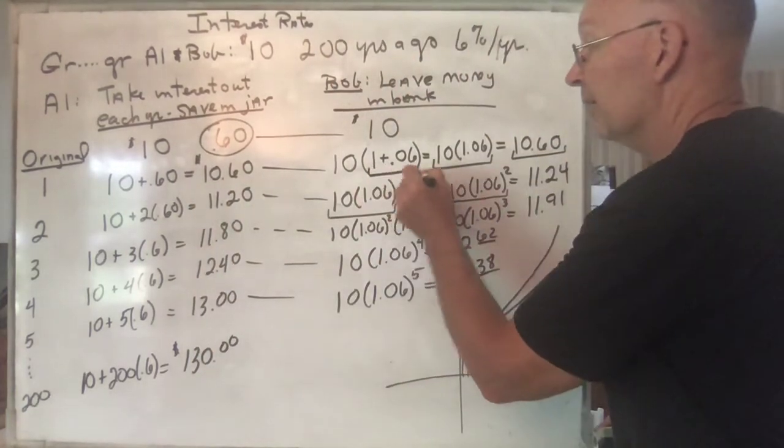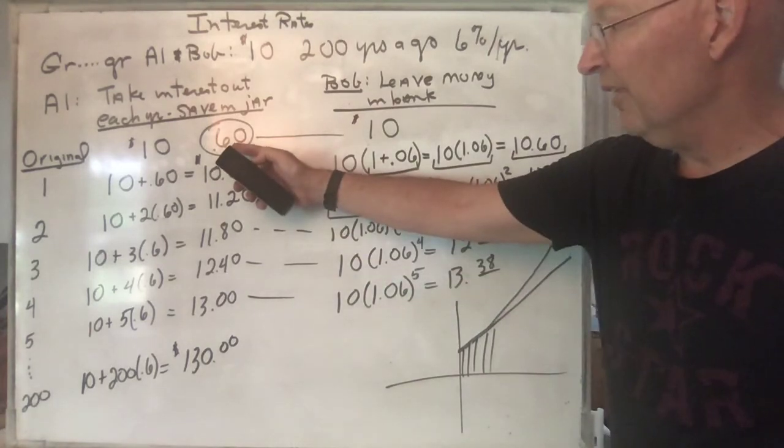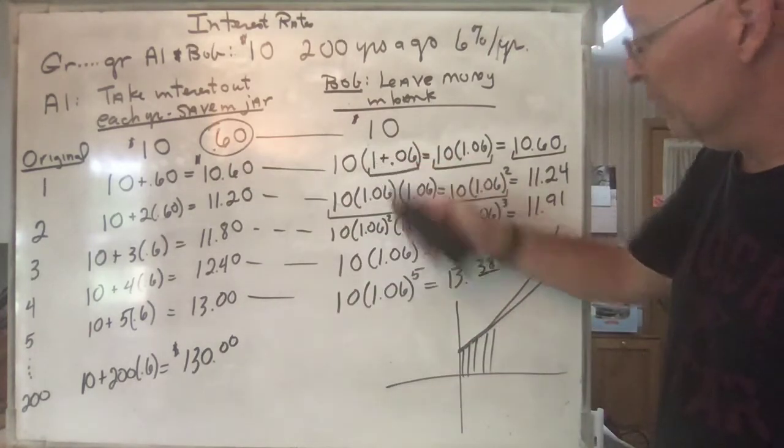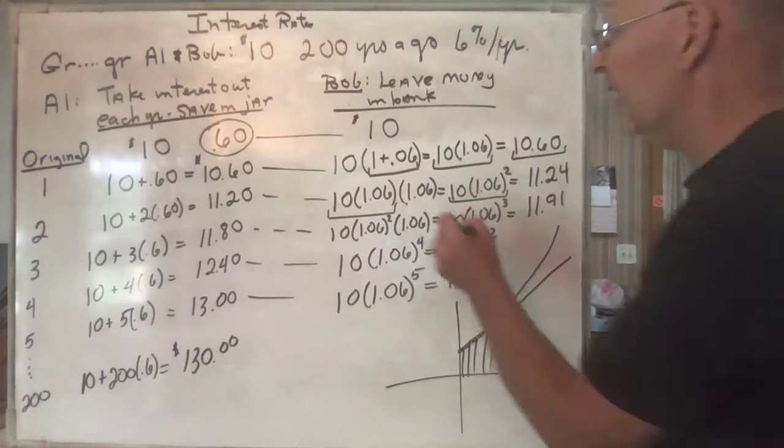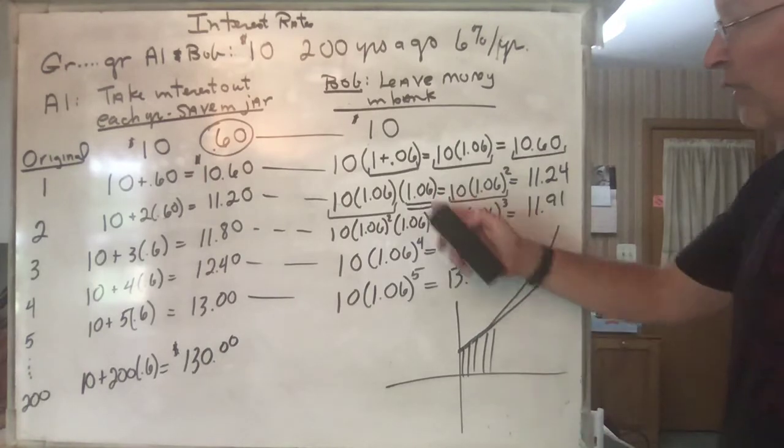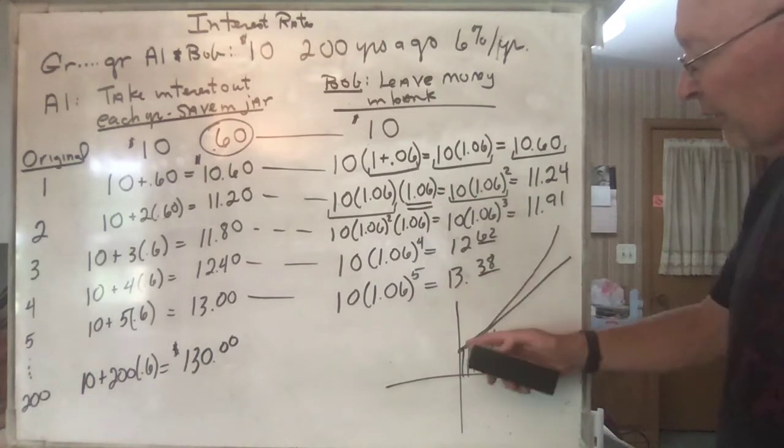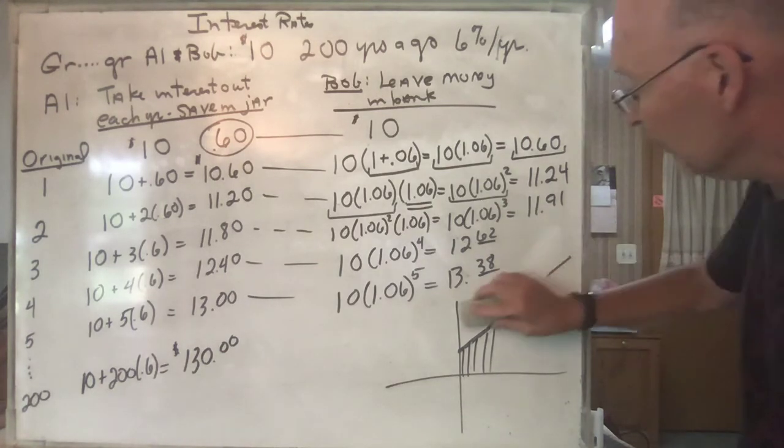Here we are multiplying by the same number each time. So here you add the same thing—that gives you linear growth. Here, going from one step to another, you multiply by the same thing, and the thing you're multiplying by is bigger than one. So just like the COVID thing, if you multiply by something that's bigger than one, what happens? It increases. Okay, it increases.